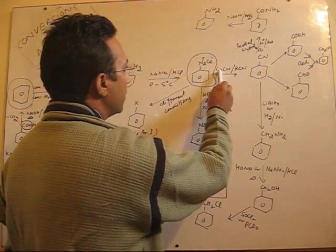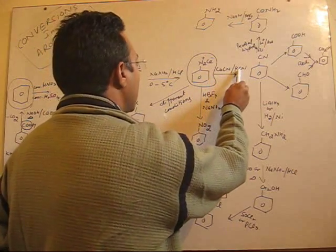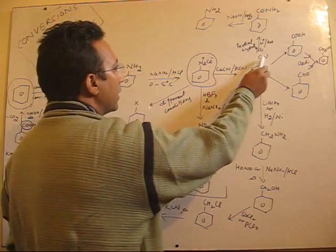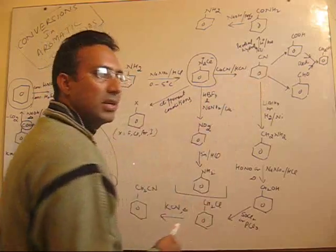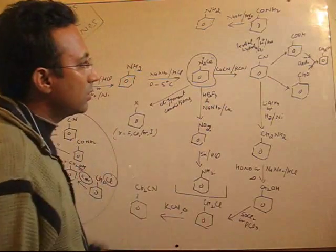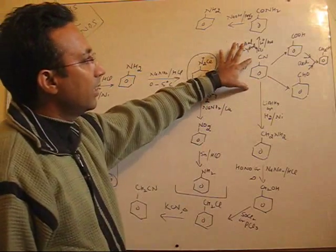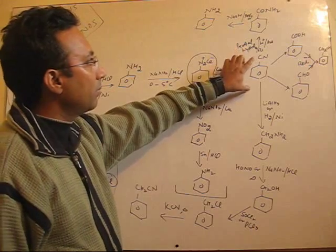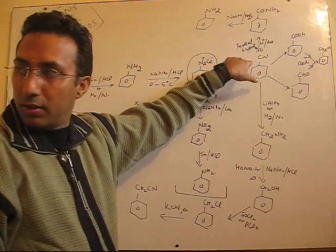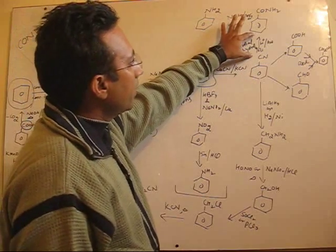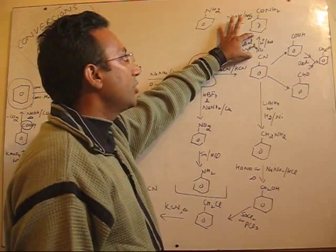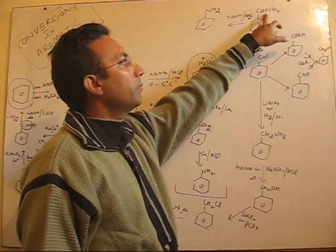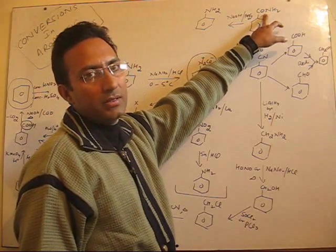If diazonium salt is treated with CuCN and KCN, then you will get substitution by a cyanide group — this is the Sandmeyer reaction. Once you get cyanide, you can enter into various different families. For example, if cyanide undergoes partial hydrolysis, you can prepare benzamide.